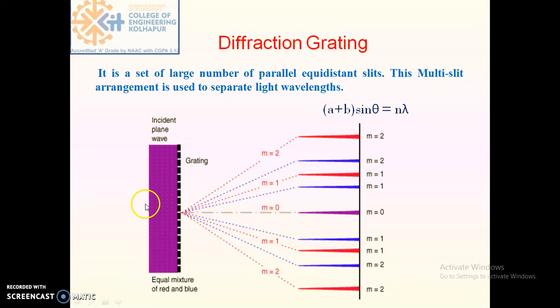Suppose the combination of red color and blue color is incident on the system—purple color is incident on this diffraction grating. Of course, parallel rays are incident. If we see this equation, (a+b) is constant. For first order, θ and λ are directly proportional with each other. As the wavelength increases, angle of diffraction will increase.